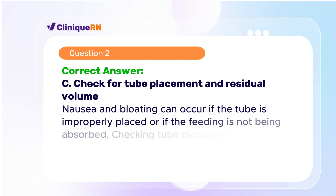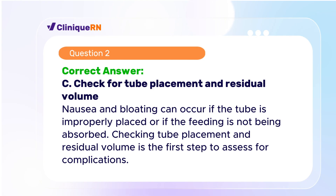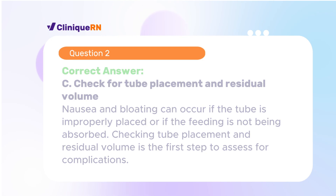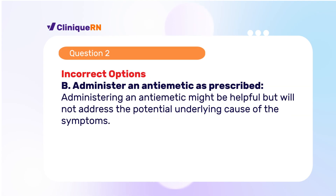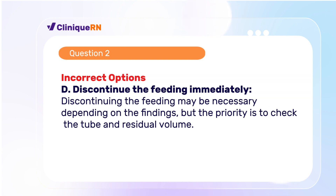The correct answer is C: Check for tube placement and residual volume. Nausea and bloating can occur if the tube is improperly placed or if the feeding is not being absorbed. Checking tube placement and residual volume is the first step to assess for complications. Decreasing the rate may help, but it is important first to check the tube placement and residual volume. Administering an antiemetic might be helpful, but will not address the potential underlying cause. Discontinuing the feeding may be necessary depending on the findings, but the priority is to check the tube and residual volume.